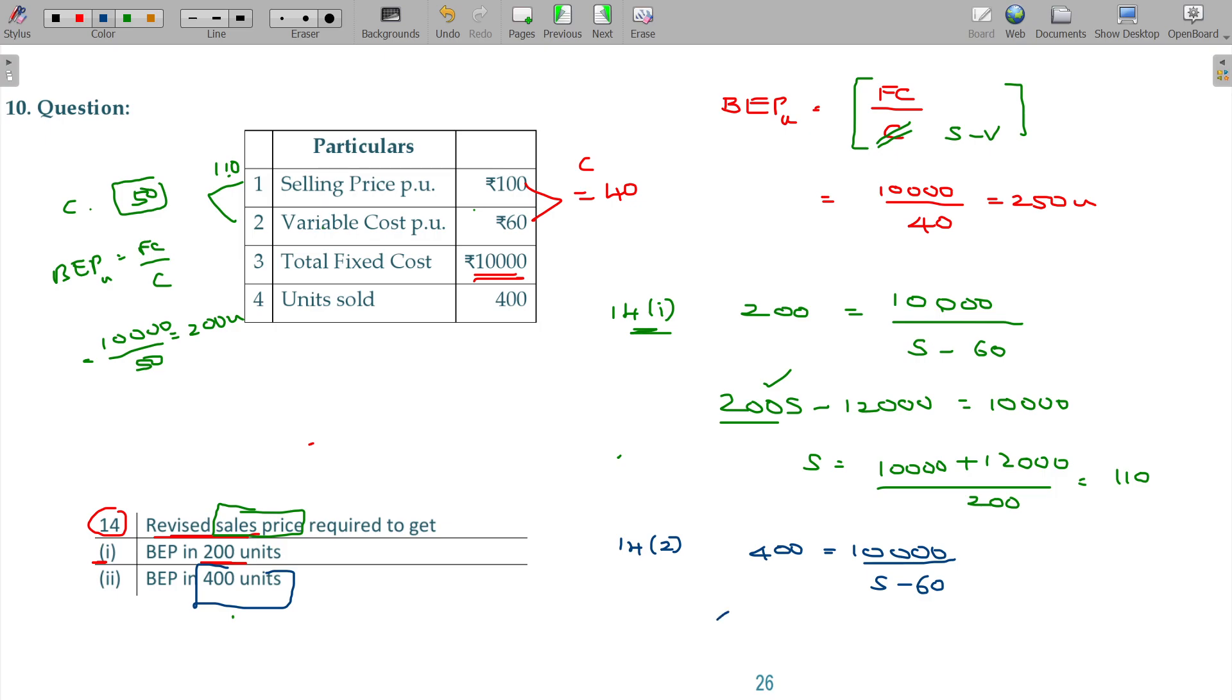The equation is 400S minus 24,000 equals 10,000. Solving for S: S equals (10,000 plus 24,000) divided by 400. The ultimate value is 85 rupees. At 85 rupees sales price, you attain BEP at 400 units.